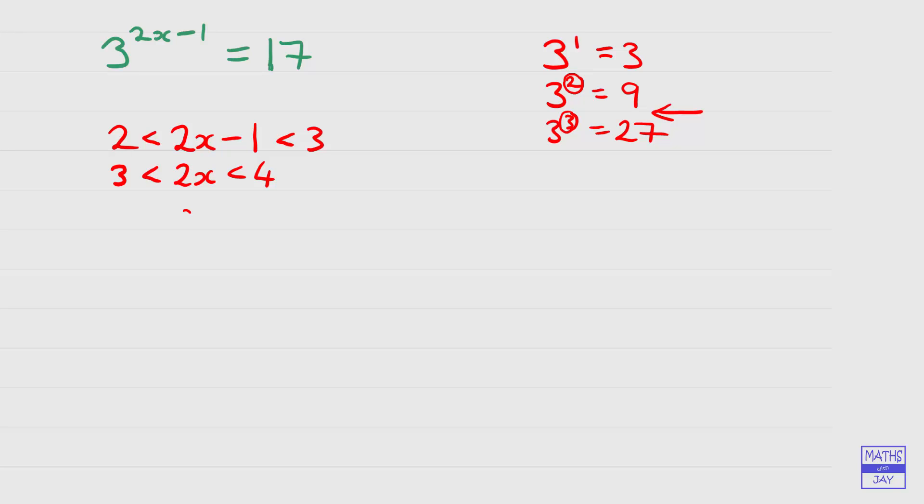So then we get that 2x must be somewhere between 3 and 4. So the value that we're looking for, x, has got to be somewhere between 1.5 and 2. Instead of writing 3 over 2, we could write that as 1.5.